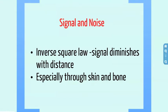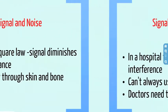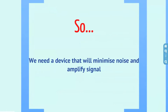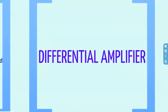Due to the inverse square law, our signal is weakened — the greater the distance it has to travel to where it is received, the weaker it is — especially if the signal is an action potential in the human body, which has to be recorded at the surface. Not only does the signal diminish through flesh, but in a hospital there is a lot of interference from other machinery, and you cannot always be in a lead bunker to reduce the interference and noise. This is a problem because doctors need to be able to see what is going on. So we need a device that will minimise noise and amplify the signal — no surprise here, we need a differential amplifier.